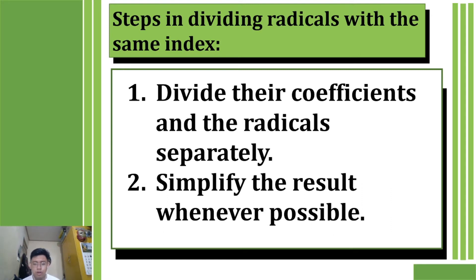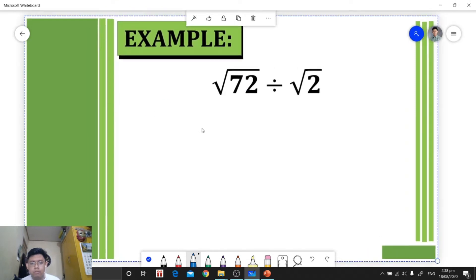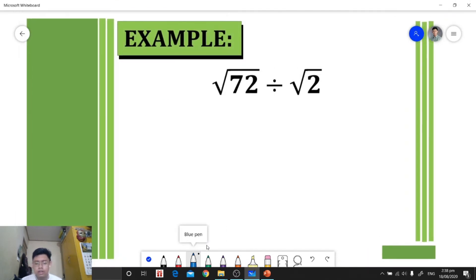Now let's go on to our example. For example, we're going to simplify this expression. In this case, we're going to apply dividing radical expressions, so divide the coefficient by the coefficient, radicand divided by radicand.